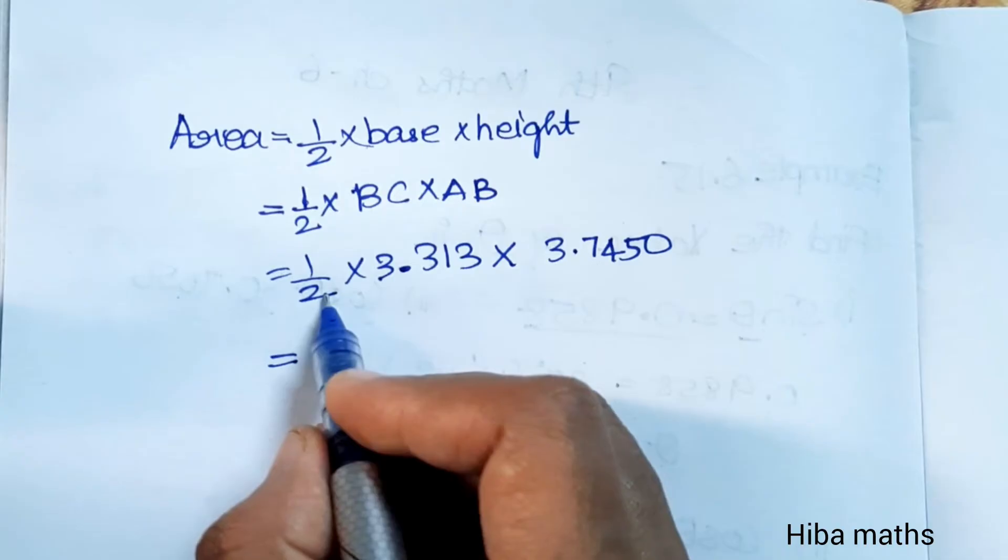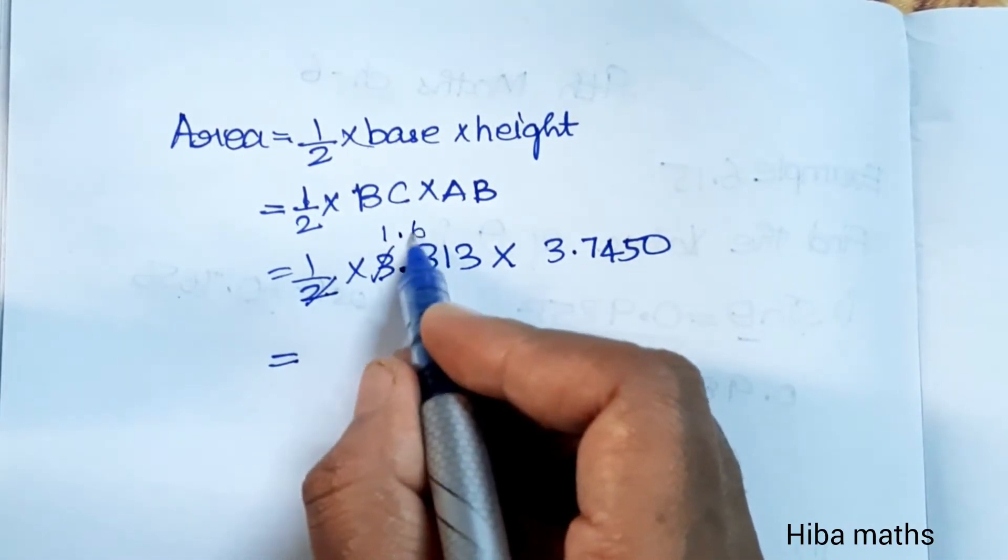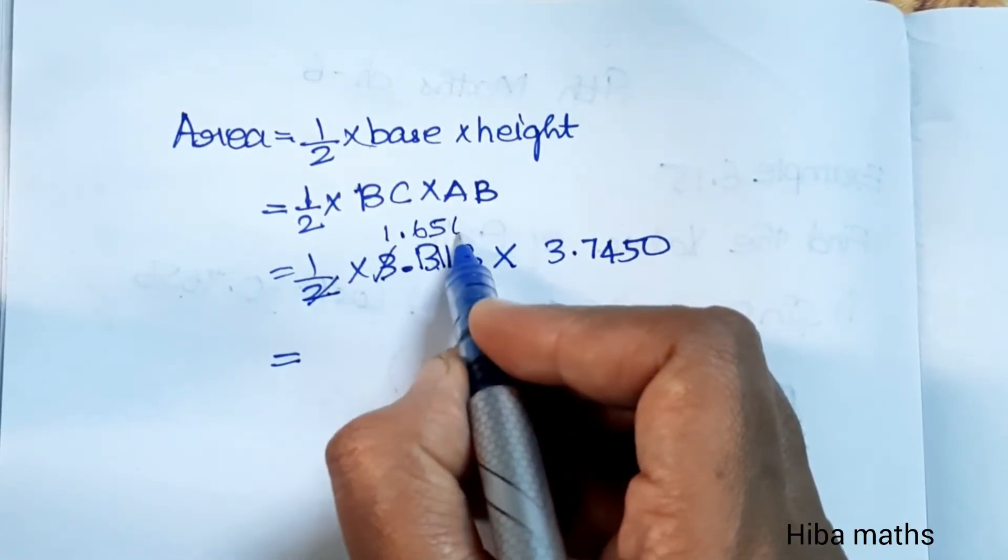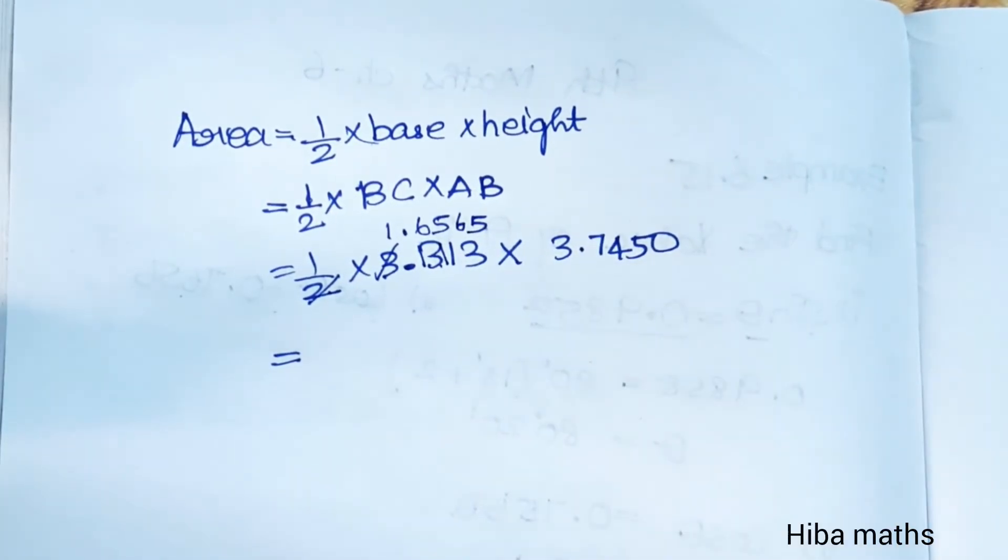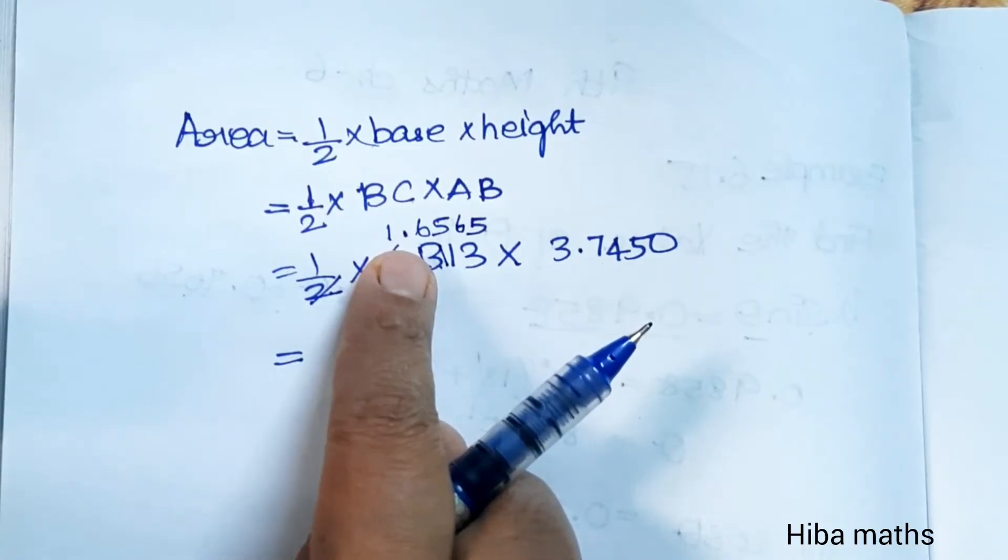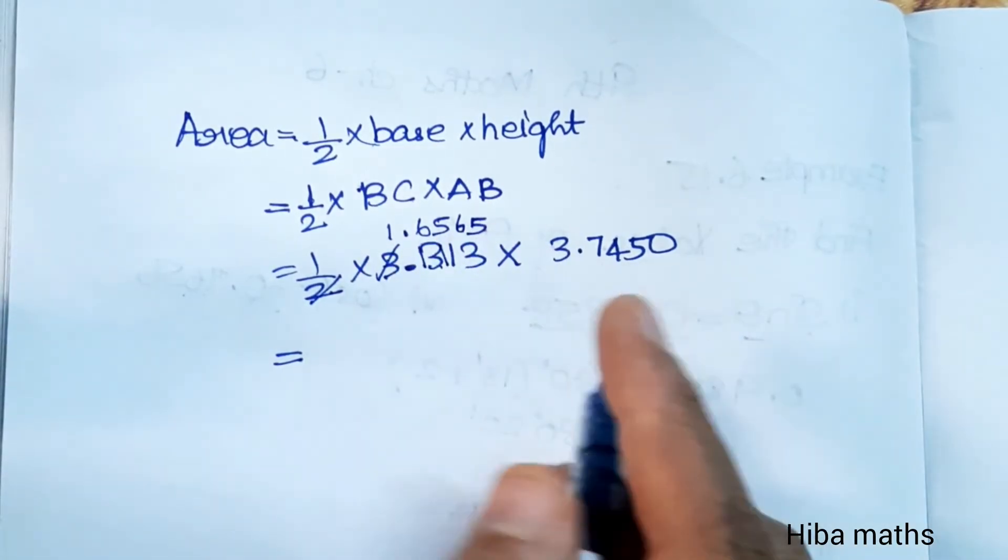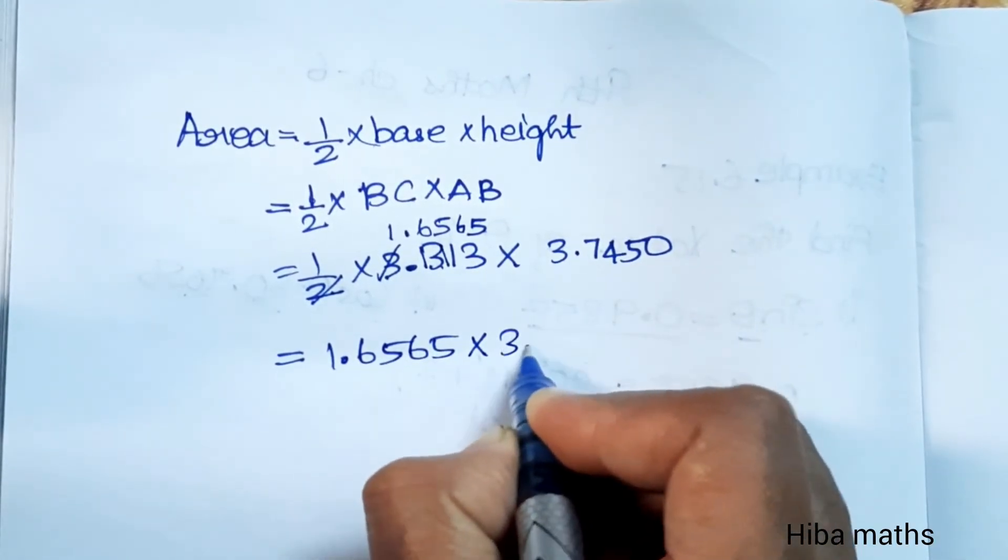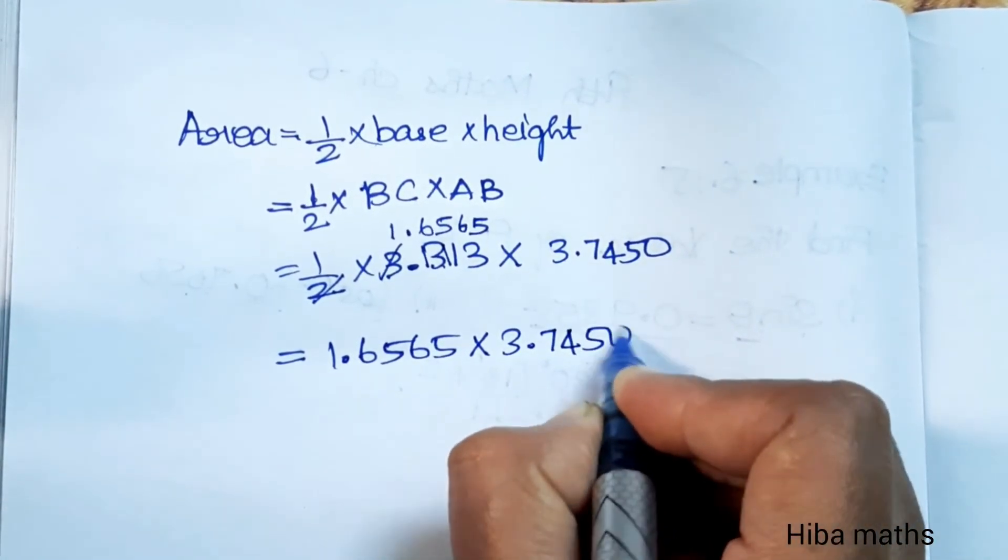So half into 3.313 into 3.7450. First divide by 2, which equals 1.6565 into 3.7450.